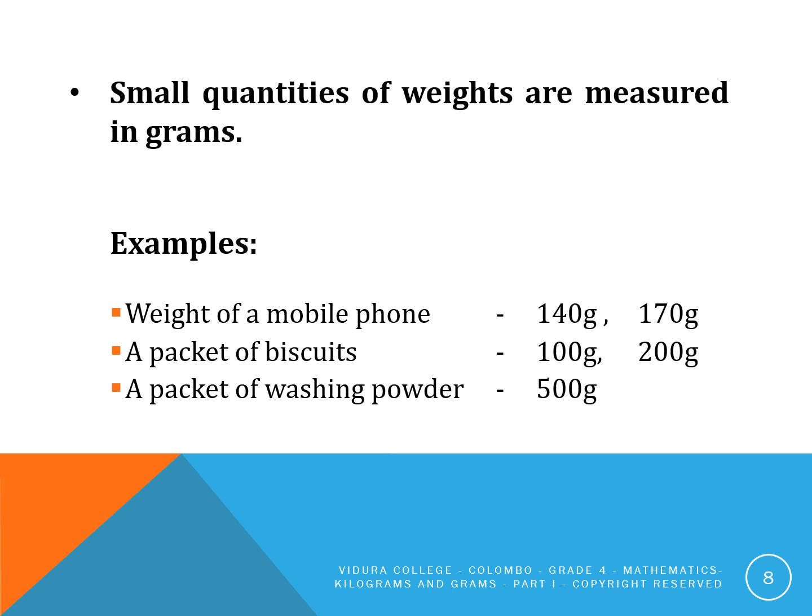Small quantities of weights are measured in grams. For example, the weight of a mobile phone can be 140 grams or 170 grams. A packet of biscuits can be 100 grams or 200 grams. A packet of washing powder can be 500 grams.